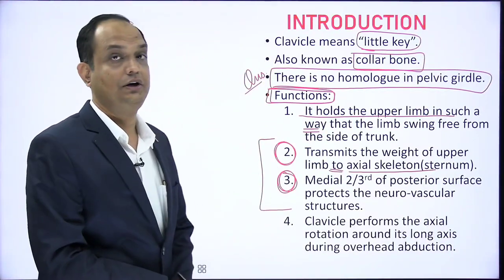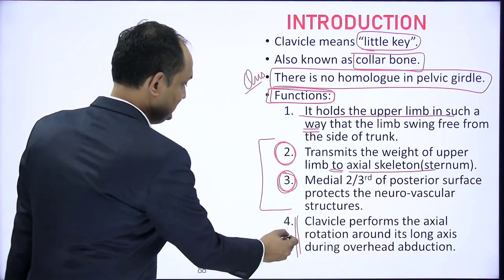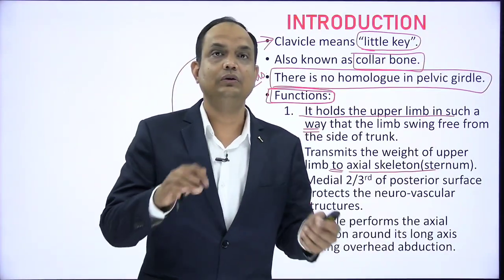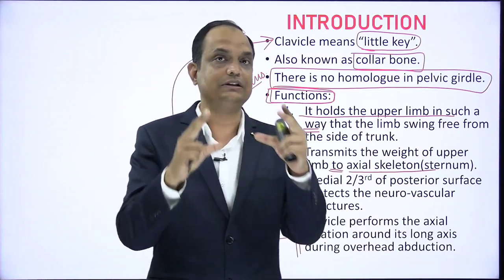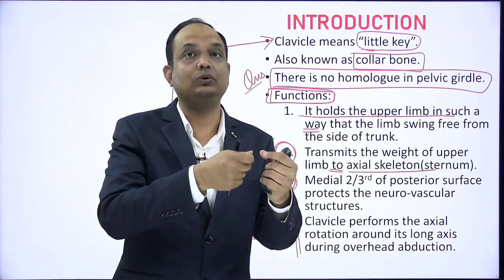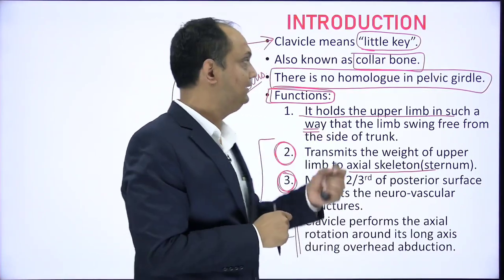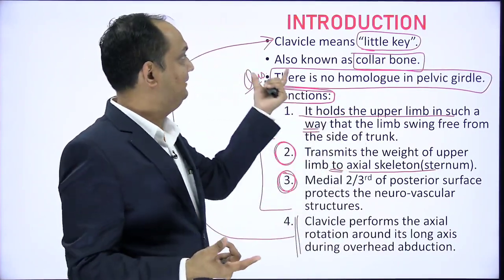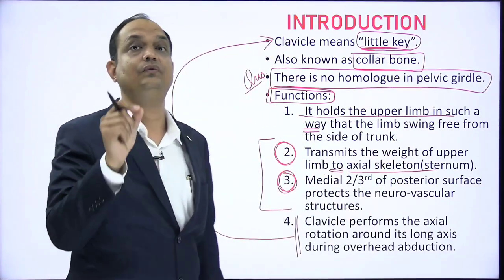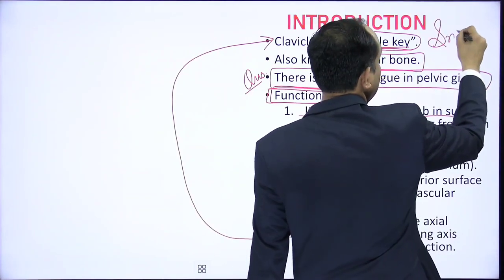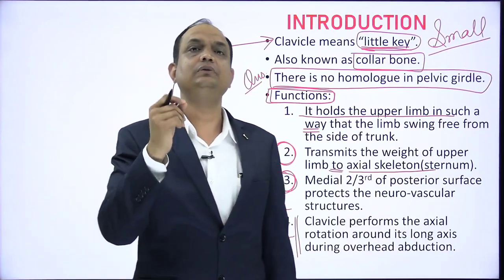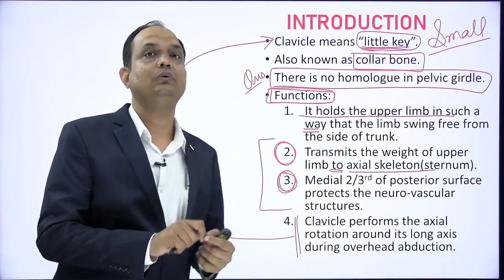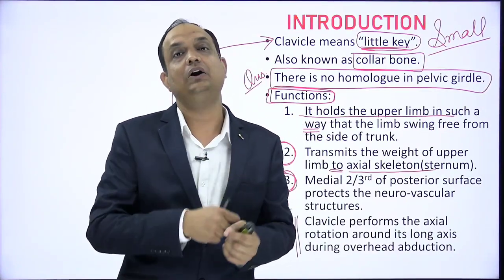The clavicle performs axial rotation around its long axis during overhead abduction, and this is the reason it is considered a 'little key.' When you have a big lock you need a long key requiring significant rotation, but a small lock needs only a small key with just 5 to 10 degrees of rotation. Similarly, the rotation of the clavicle is very small — sometimes you cannot even appreciate it — and that rotation is equivalent to the movement of a little key opening a small lock, only about 5 to 10 degrees.